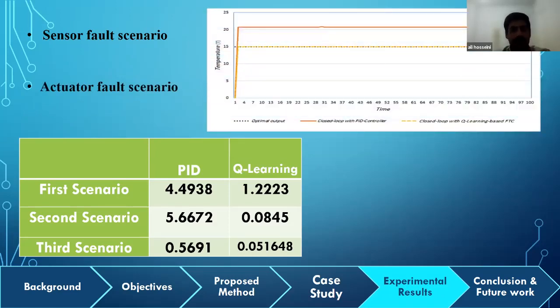In the second scenario, a constant fault with amplitude of 0.4 was added to the actuator, and then the result was depicted in the figure, and the total MSE or mean square error could be found in the second row of the given table. As shown in the figure and table, the Q-learning controller performed flawlessly, and the output remained at the optimal point.